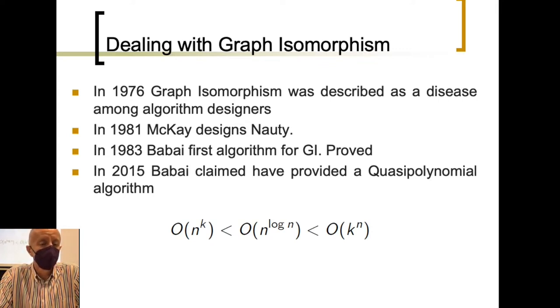In order to do some history about the problem we are dealing with, 1981, McKay, an Australian guy, designed NAUTI. NAUTI is one of the best deterministic algorithms solving the problem of graph isomorphism.